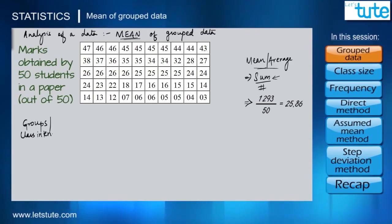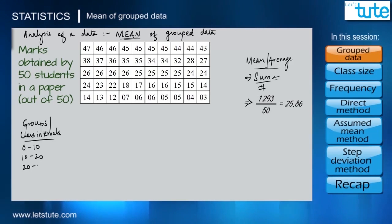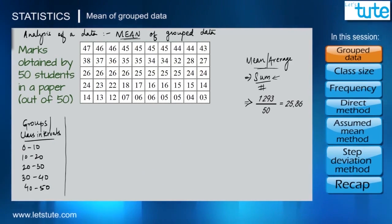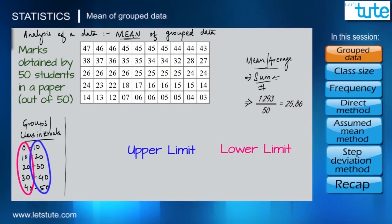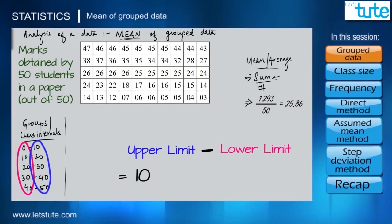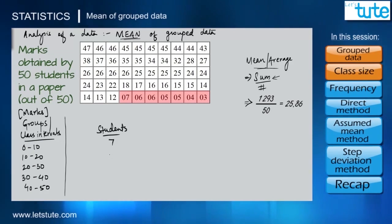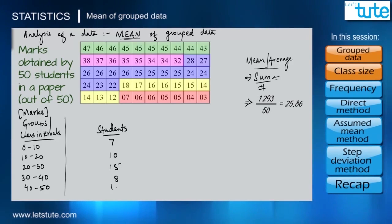We call these smaller groups class intervals. Since the marks range from 1 to 50, we divide them as: 0 to 10, 10 to 20, 20 to 30, 30 to 40, and 40 to 50. Each class has a lower limit and an upper limit, with a difference of 10 marks — this is the class size. Grouping the students: 7 secured 0–10, 10 secured 10–20, 15 secured 20–30, 8 secured 30–40, and 10 secured 40–50. This column is the frequency column, denoted as fi.